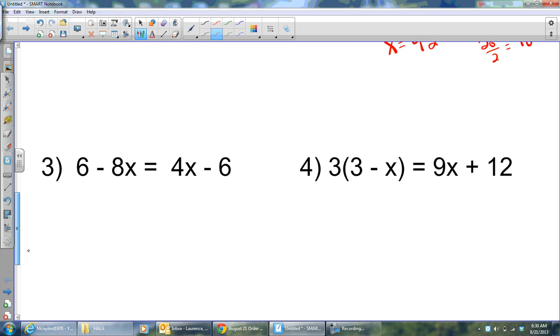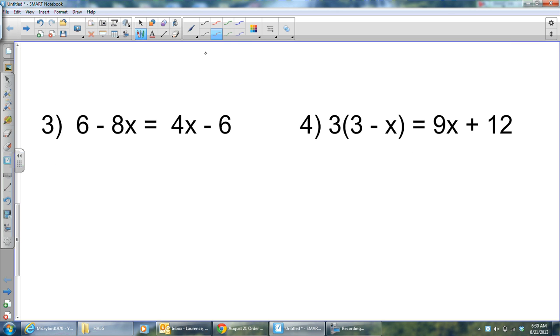All right, two more examples. And then we'll wrap up this video. Now, in problem three, I have 6 minus 8x equals 4x minus 6. Now, in this situation, I can't combine like terms because the equal sign is separating. Now, I know many of you were bothered by this problem in class the other day. And remember, we talked about it. We have x's on both sides. It bothers you. Take one of the terms away. Yeah, I'm going to take away the 4x.